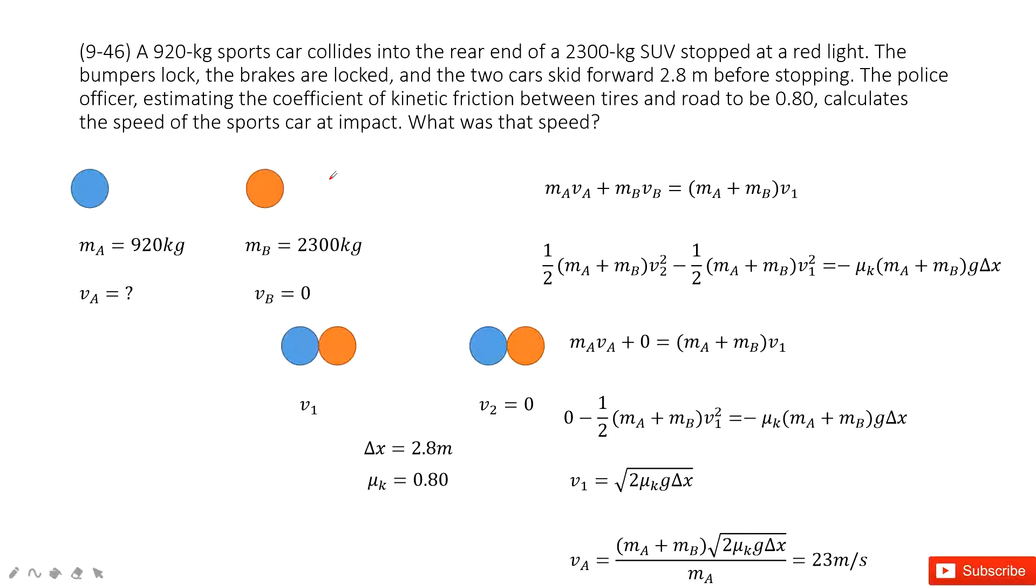So you can see, the first one we have object A. The mass is given, but initial velocity we don't know, we need to find it. And it just hits object B. The mass is given, initial velocity is 0, stationary.